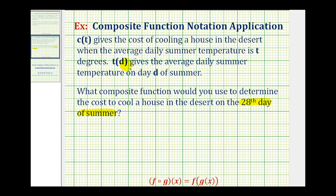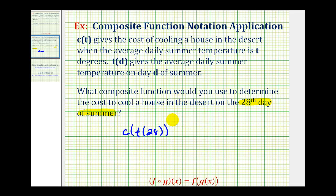So we want to know the cost to cool the house when we're given it's the 28th day of summer. If we evaluate t of 28, this will give us the average daily summer temperature on that day. And then once we know the average temperature, we can substitute that into function c to determine the cost of cooling the house. So we first want to evaluate function t of d, or in this case t of 28 — this will be the inner function. The output will be the average daily summer temperature, which will be the input into function c, our cost function. So c of t of 28 is our composite function, which we can also write as c after t of 28.